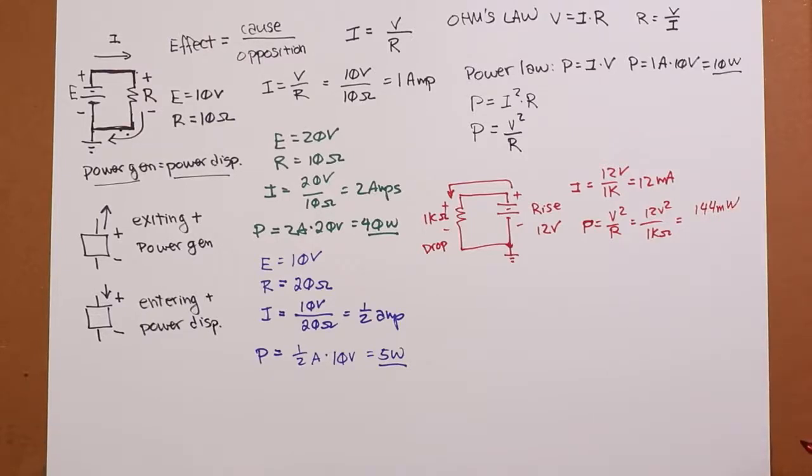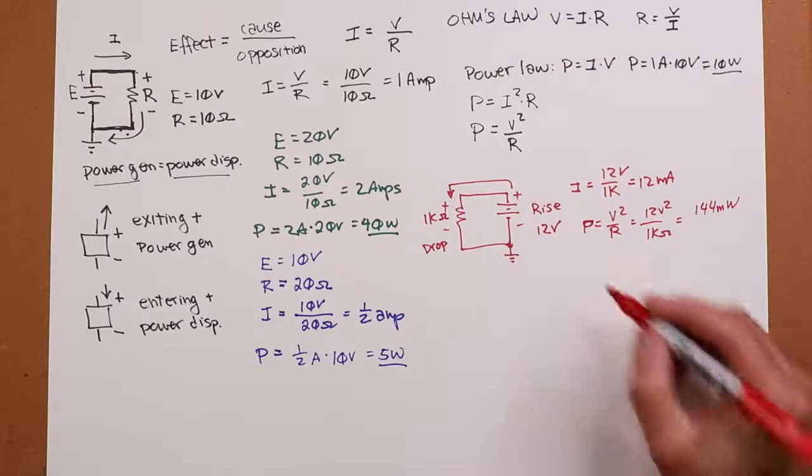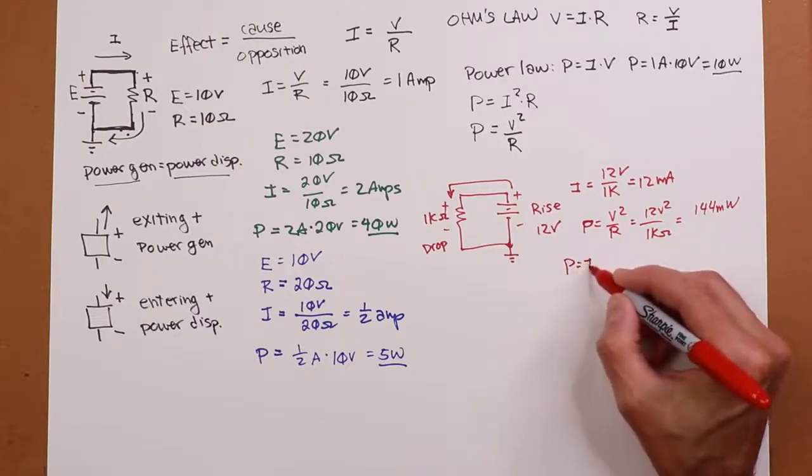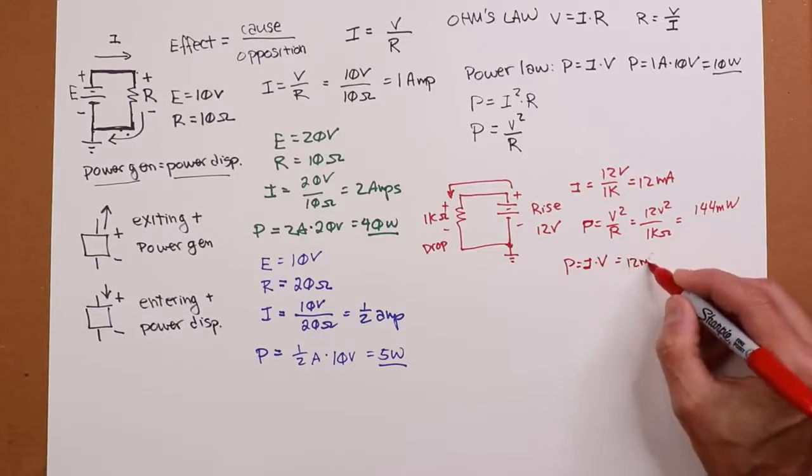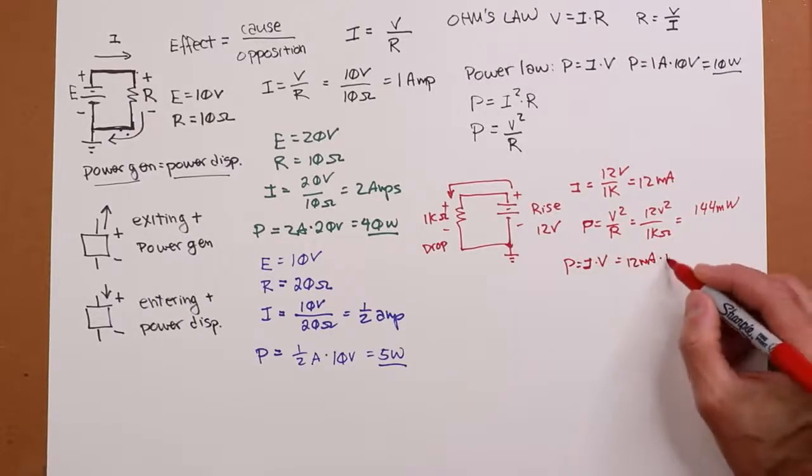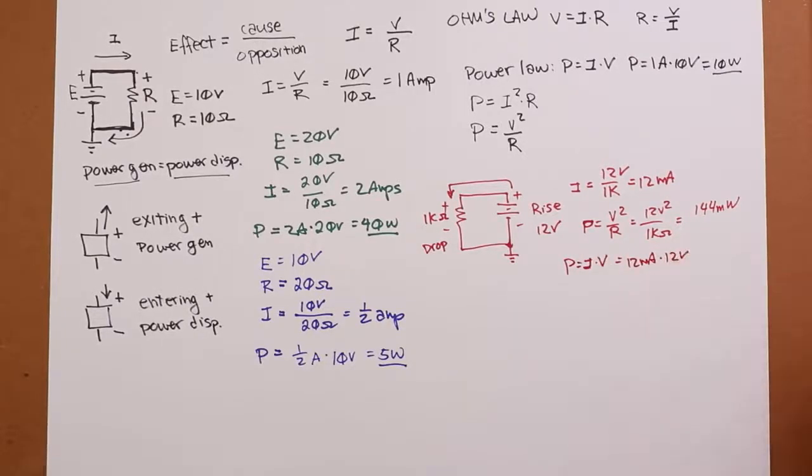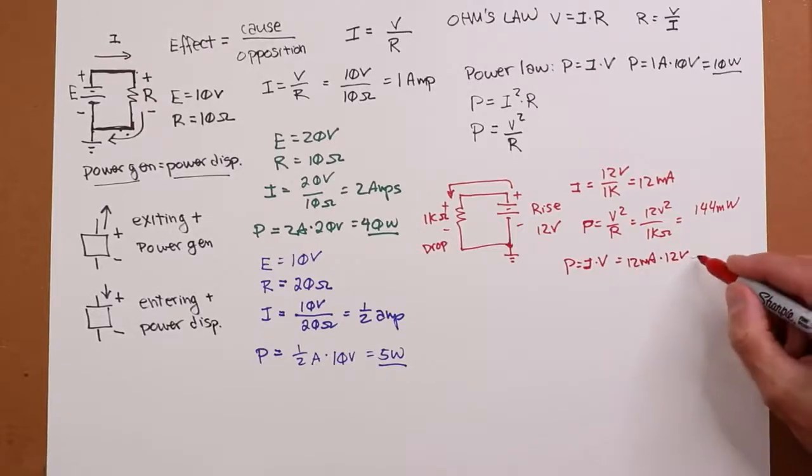Okay, or you could do I times V if you prefer. So the current's 12 mils, the voltage is 12 volts. 12 times 12 again, 144 millis. And then amps times volts is watts. So once again, 144 milliwatts.